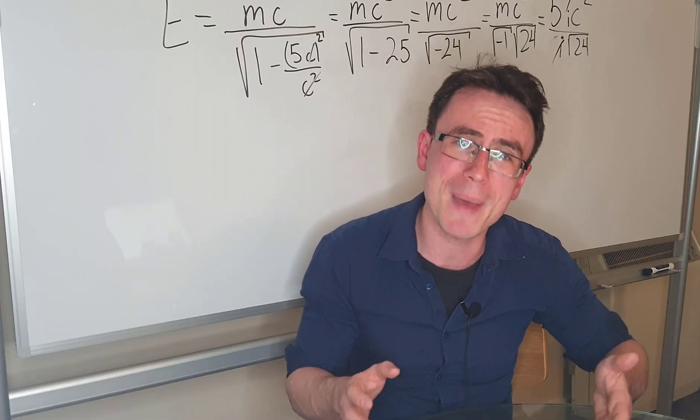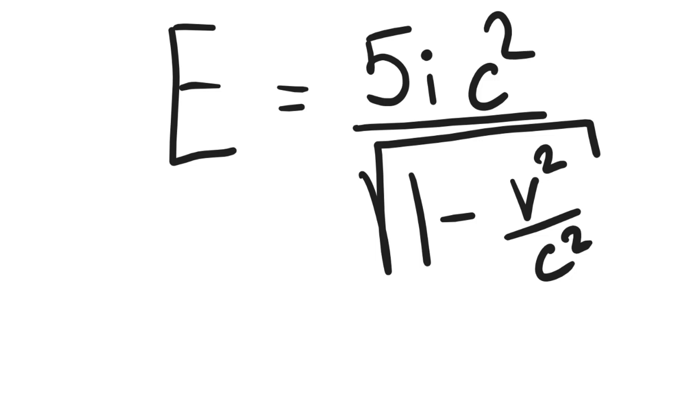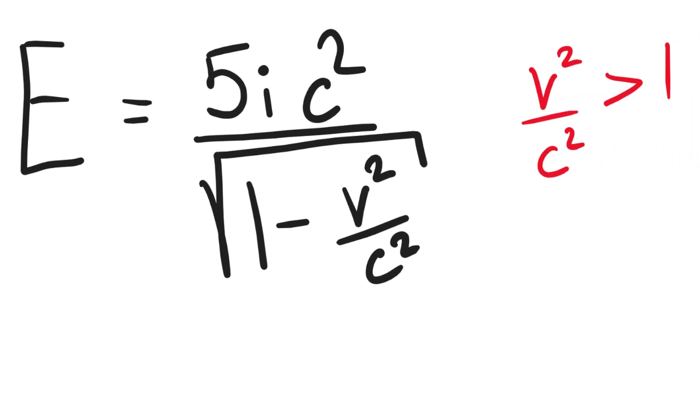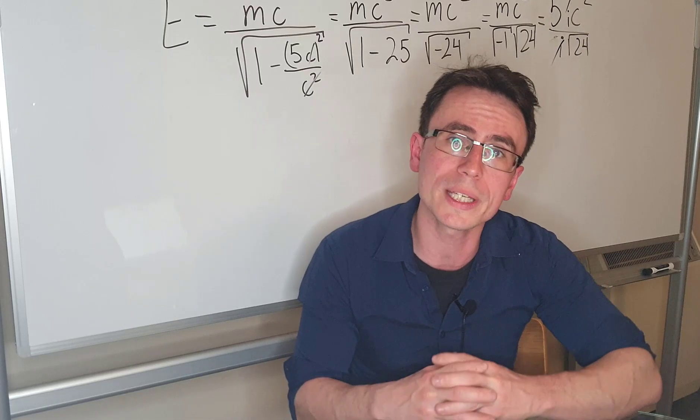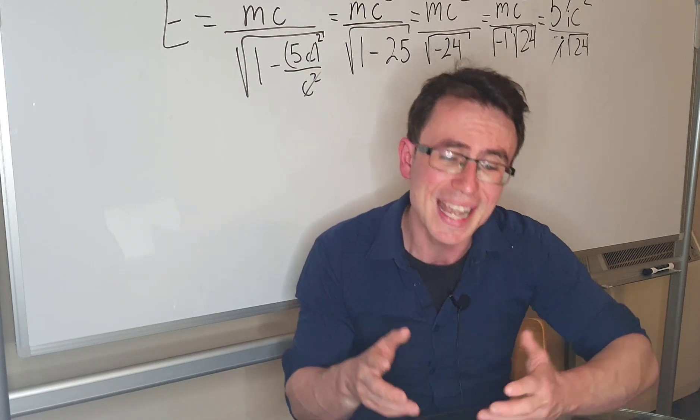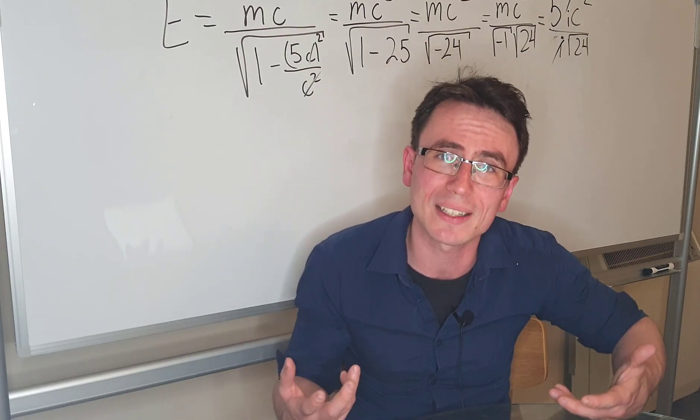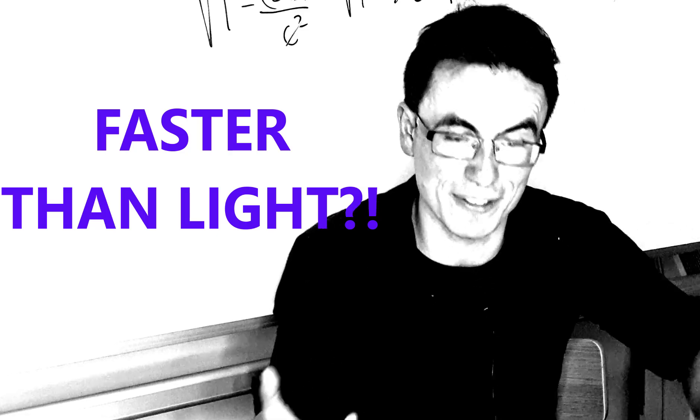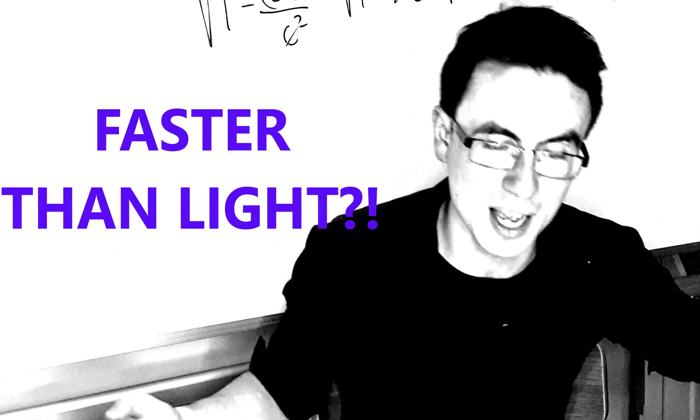If the mass is imaginary and we need to keep the energy real, this means that the denominator of the fraction needs to be imaginary. This only occurs if the ratio of v² over c² is greater than one and you're traveling faster than the speed of light.